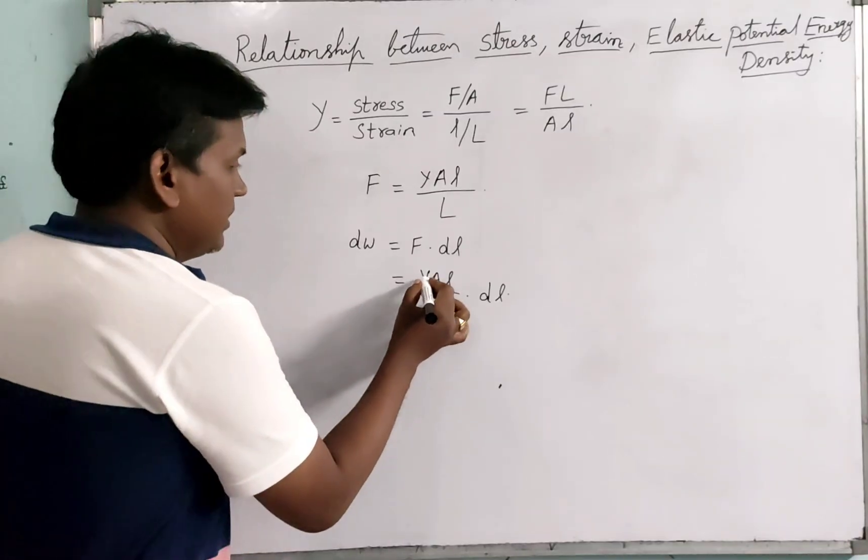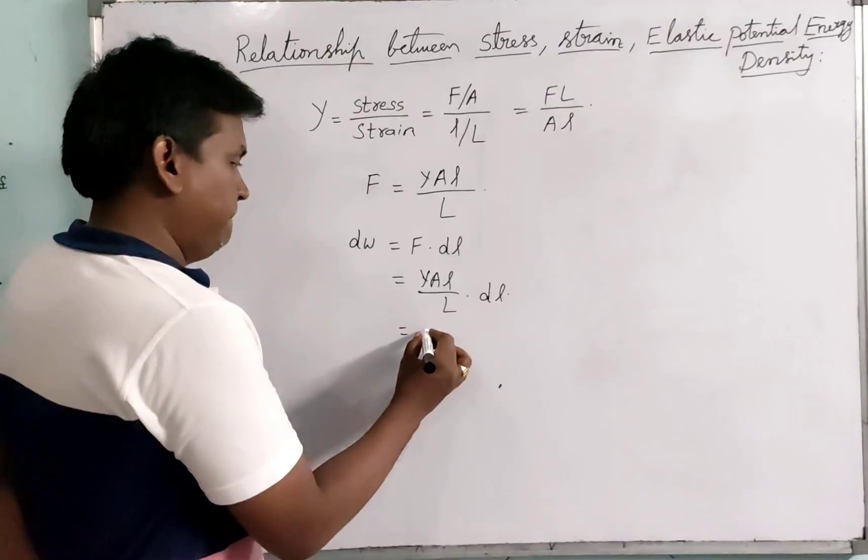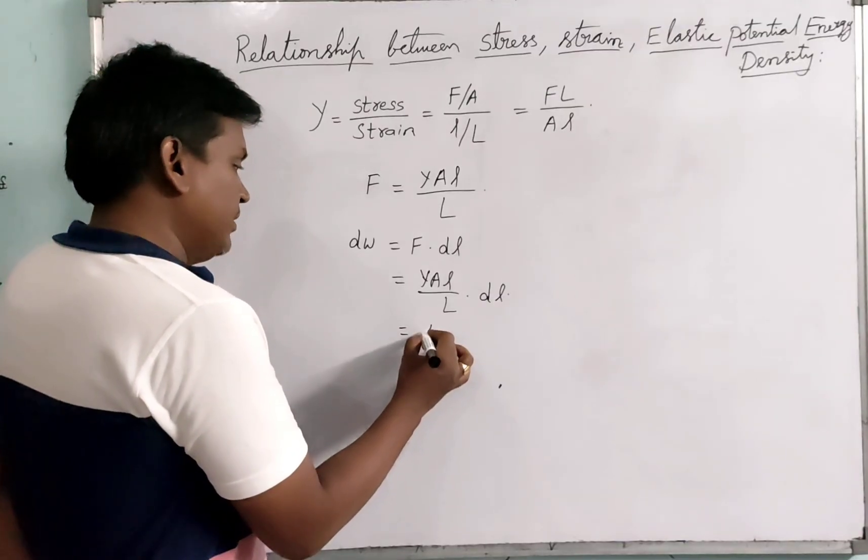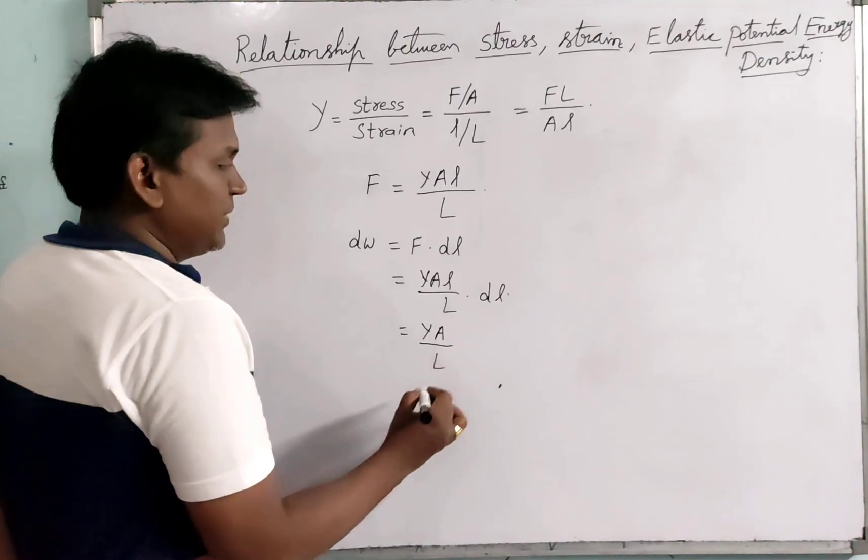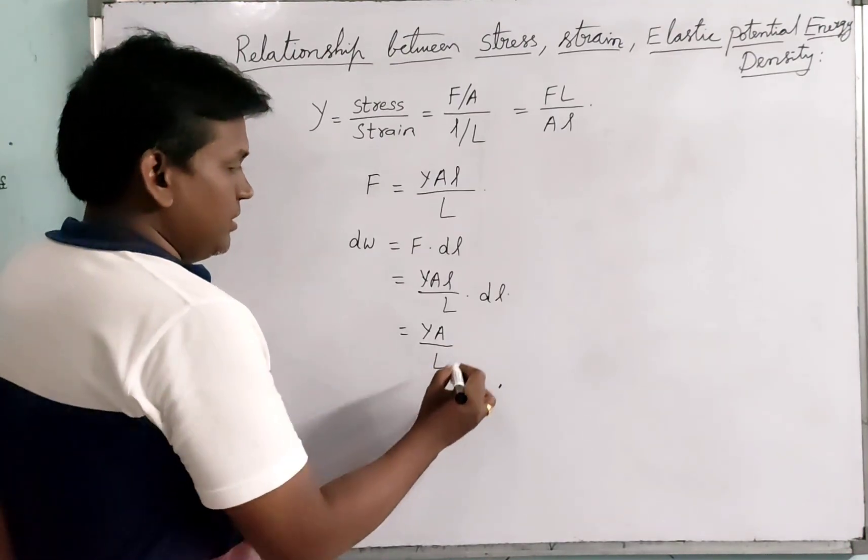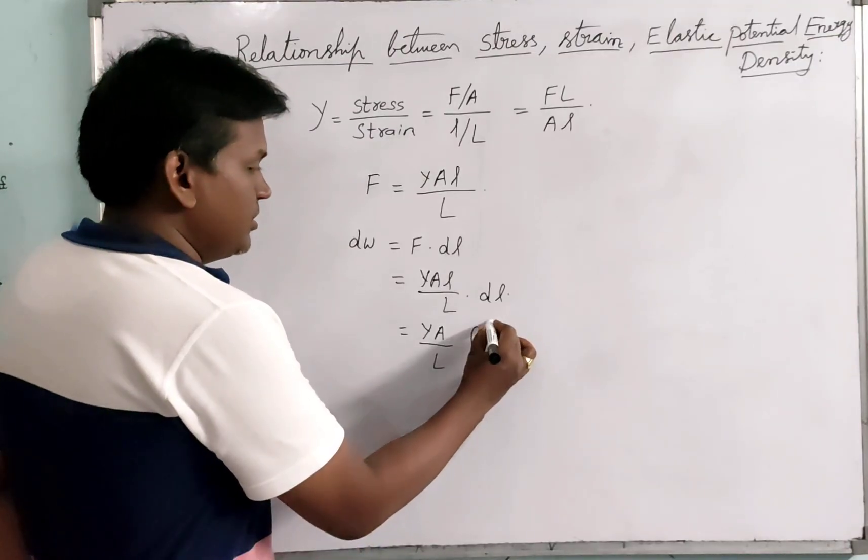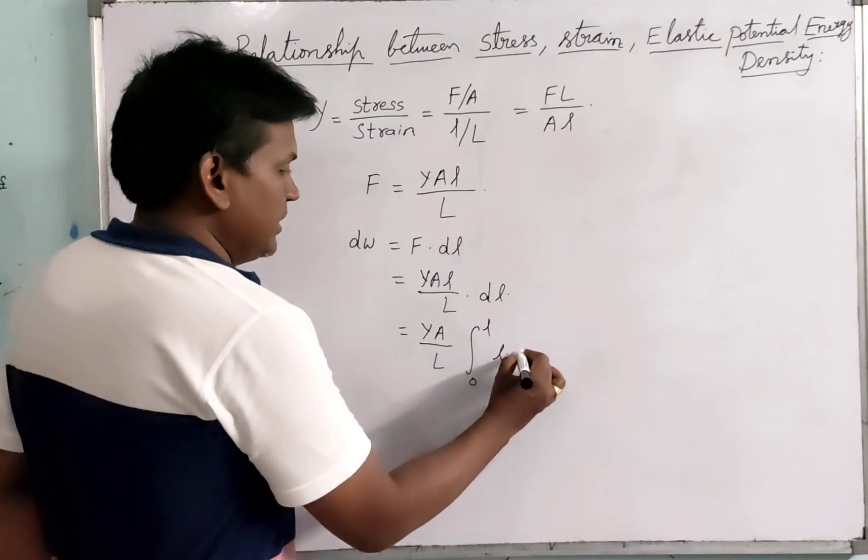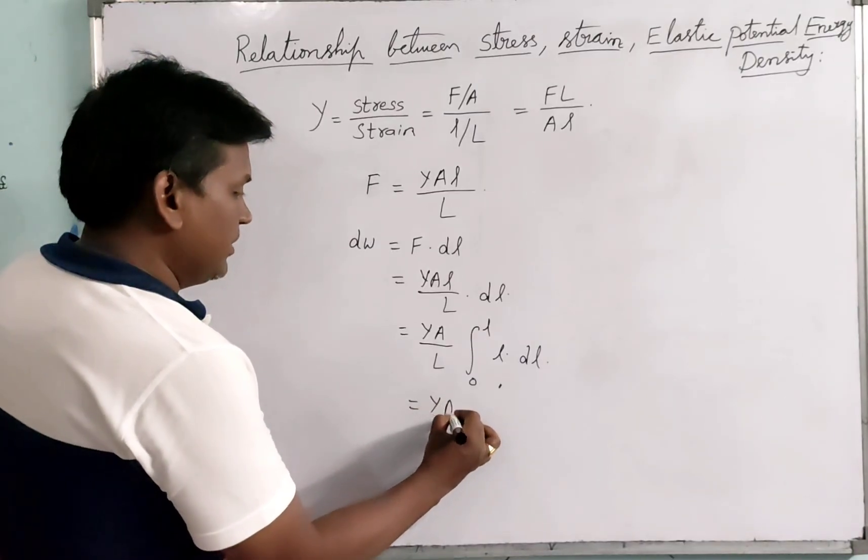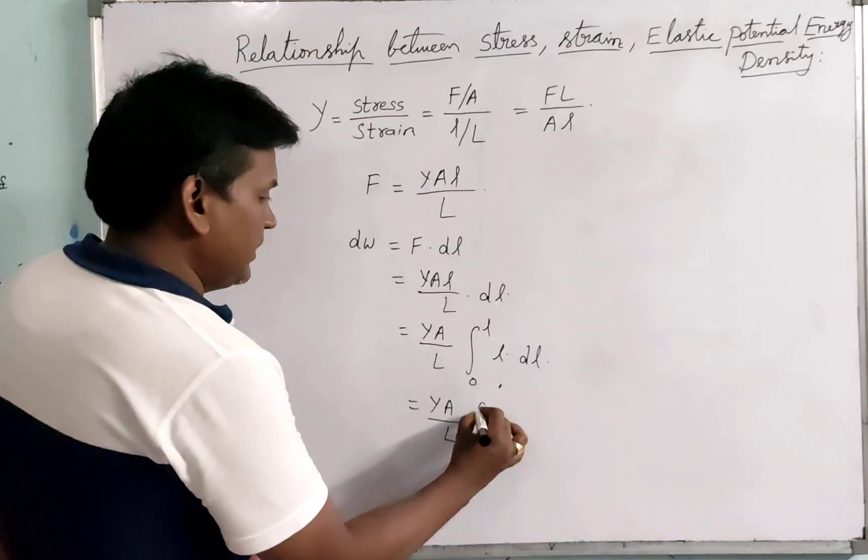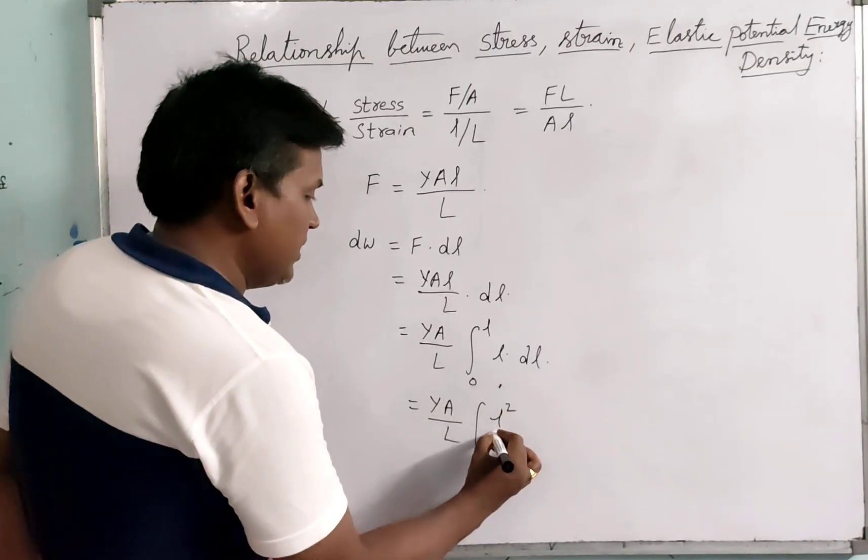Here Y is constant, A is constant, and L is constant. For remaining, let us integrate the integral of 0 to L, L into DL. We will have Y A upon L, after integration we will have L squared by 2.